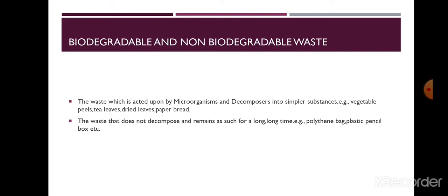Biodegradable waste includes vegetable peels, tea leaves, dried leaves, paper, bread, etc. All other waste materials which cannot be degraded by microorganisms like bacteria and fungi for a long period of time, and they remain as such and get accumulated over each other — these are known as non-biodegradable waste. Examples include polythene bags, plastic pencil boxes, and metal cans.